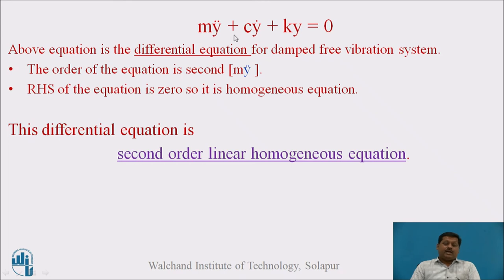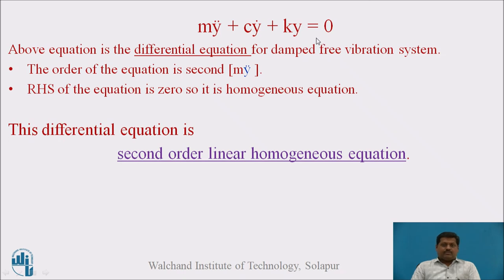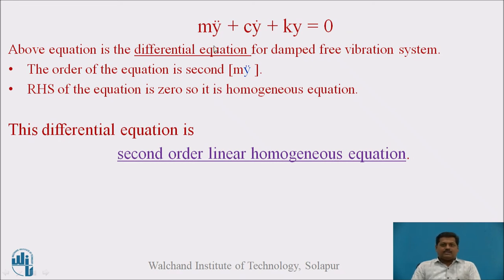Rearranging: mÿ + cẏ + ky = 0. Here, mÿ is the inertia force, cẏ is the damping force, and ky is the elastic force. The summation of all three equals zero. This is a second-order equation because of the y-double-dot term. The right-hand side is zero, so the type of differential equation is a second-order linear homogeneous equation. A single storey building with infill wall is thus modeled with this second-order linear homogeneous equation.